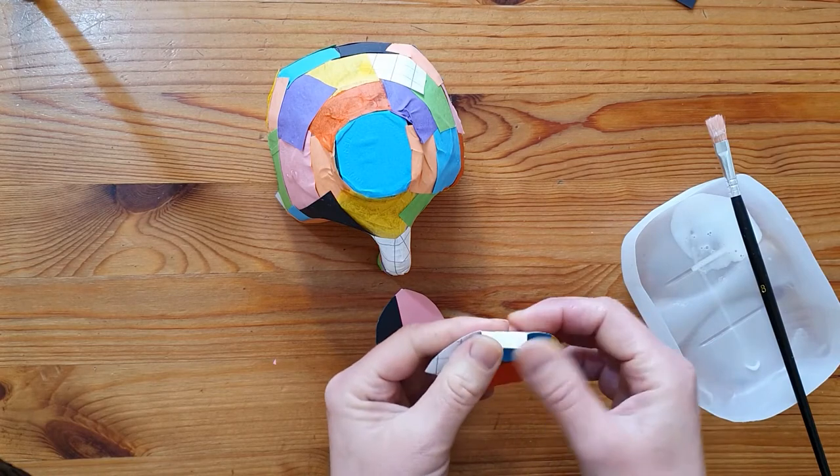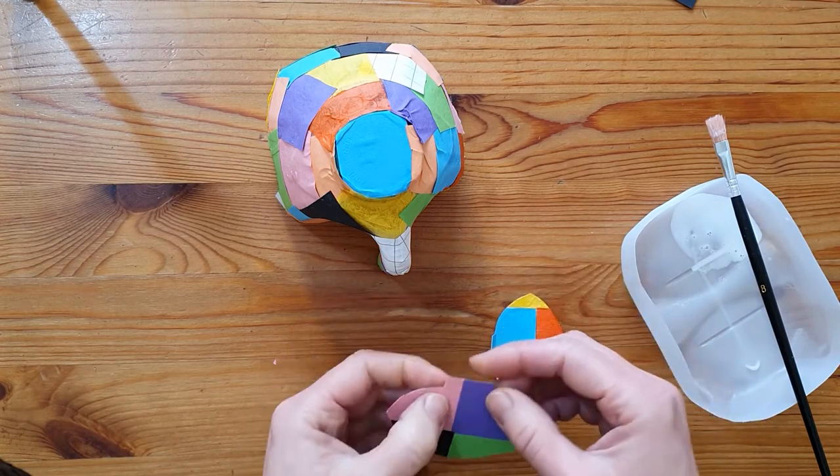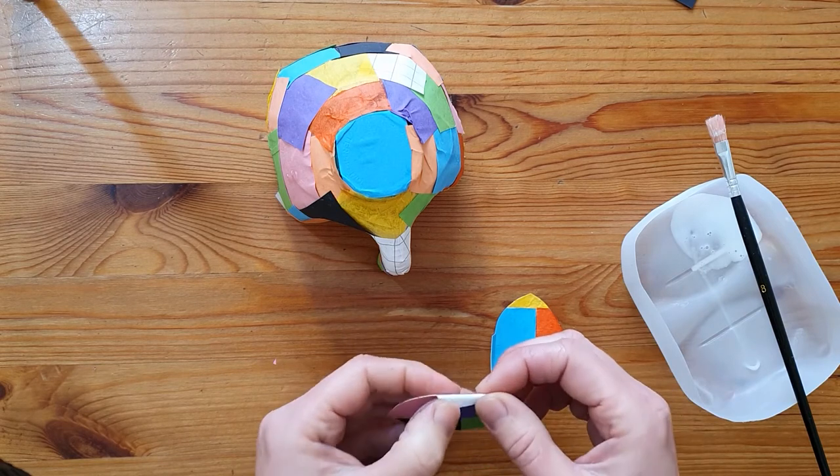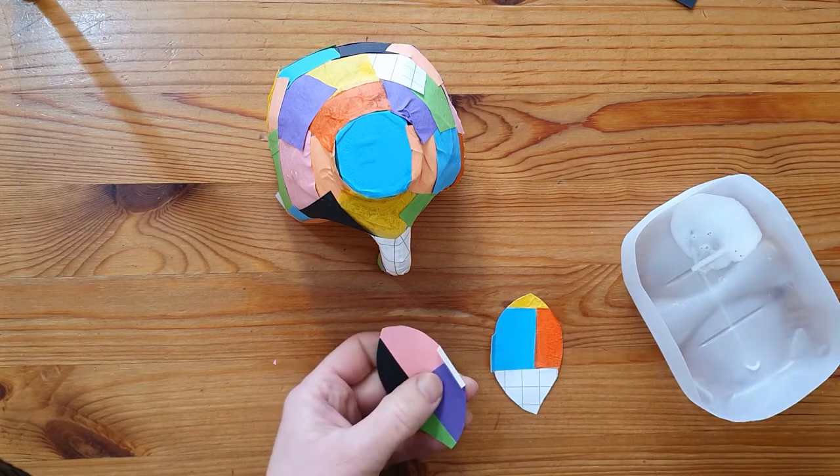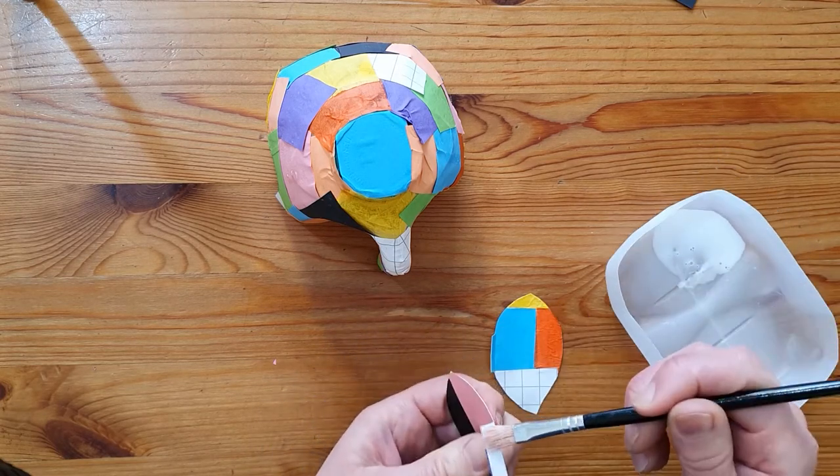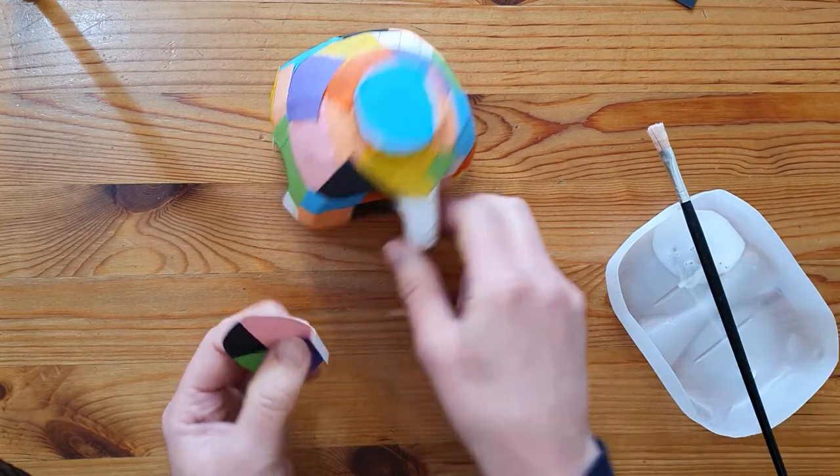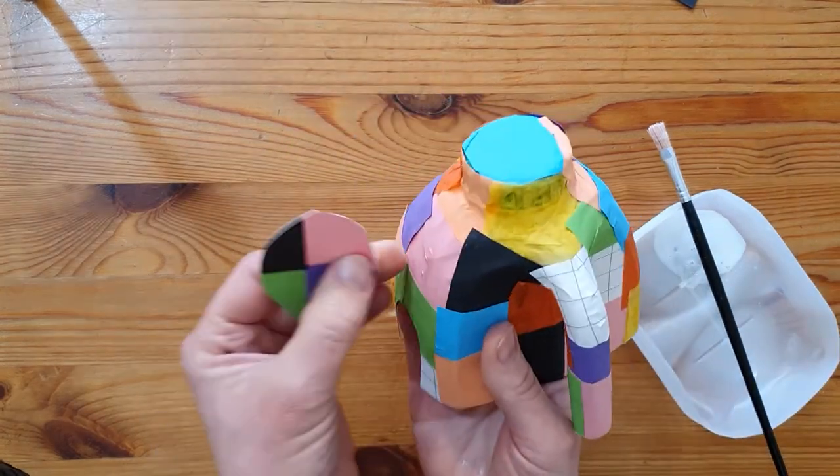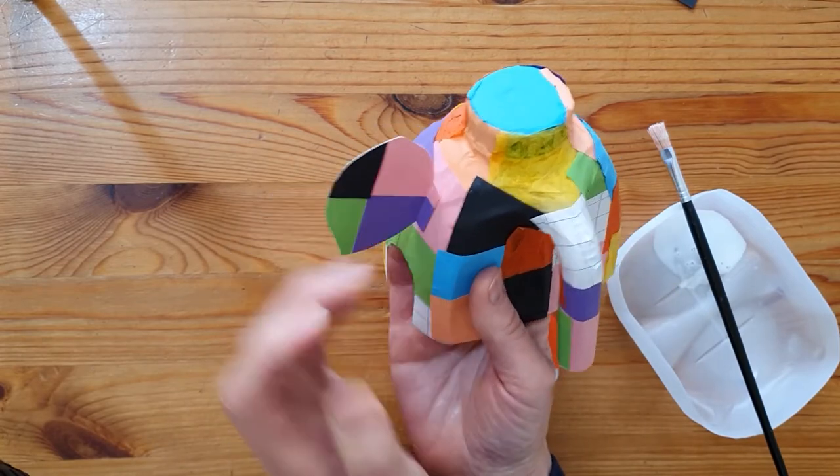Fold back the flaps and add plenty of glue. Position the ears and hold them on firmly while they stick. You may need to glue them again so that they stay attached.